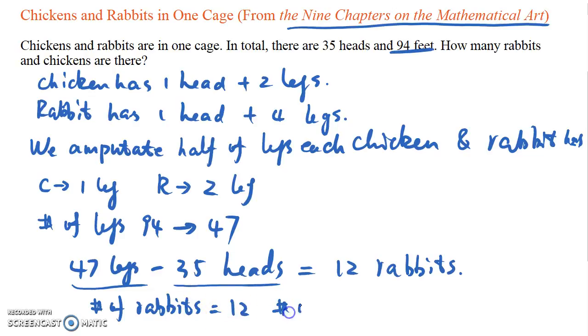The number of chickens equals 35 minus 12, which equals 23.